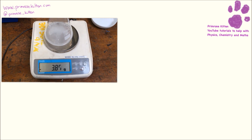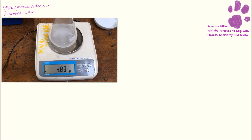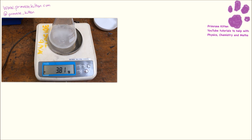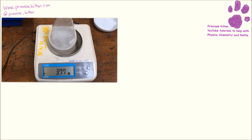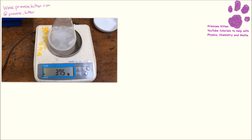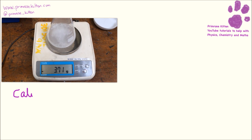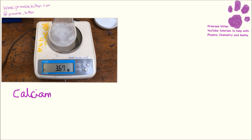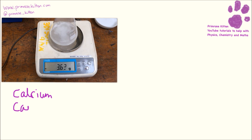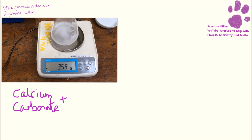The examiners like asking this sort of question because it's not necessarily one that's very commonly done in class, since two decimal place balances are very expensive and there aren't necessarily lots of them lying around. In this video I'm going to show you the experiment and what the graph is going to look like. What we added in was calcium carbonate, and in the flask already was hydrochloric acid.